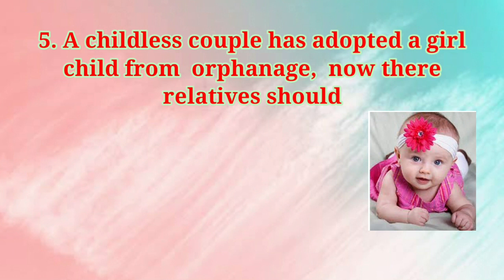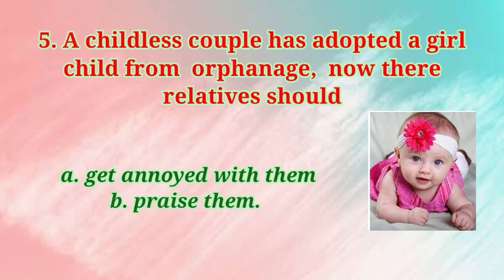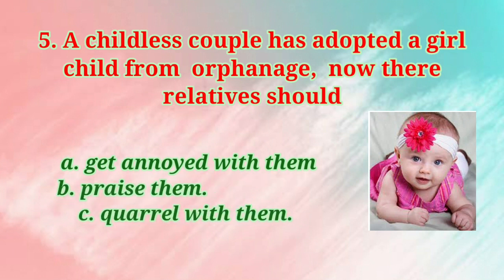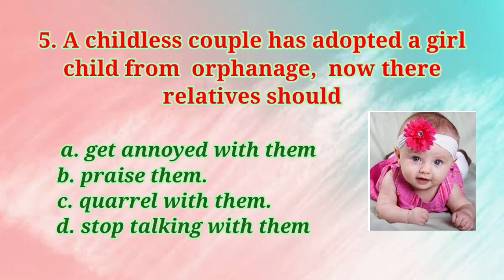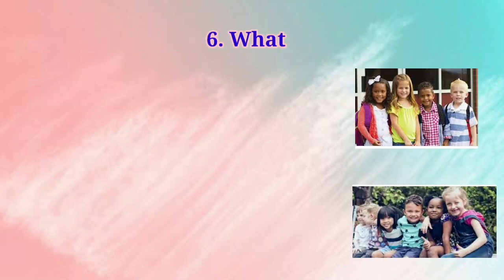Number 5: A childless couple has adopted a girl child from an orphanage. Now, their relatives should — the options include Get annoyed with them. The right option is B — Praise them. A childless couple has adopted a girl child from an orphanage; their relatives should praise them.